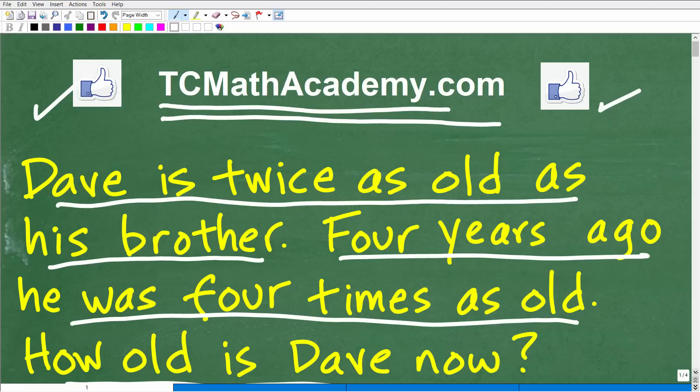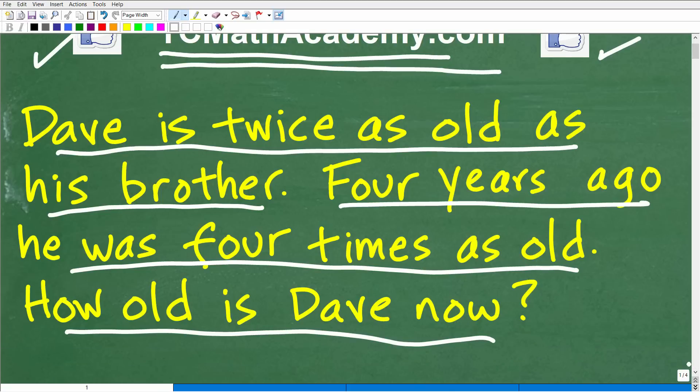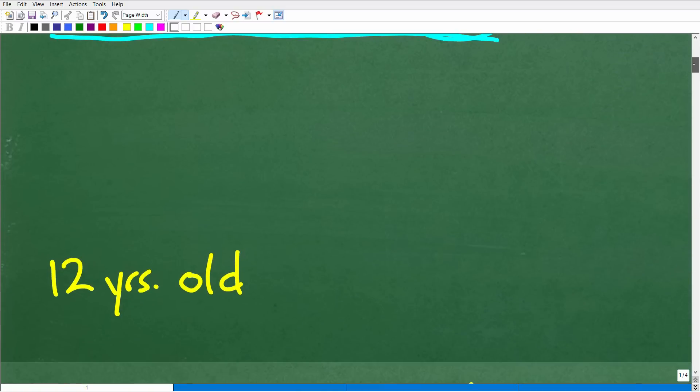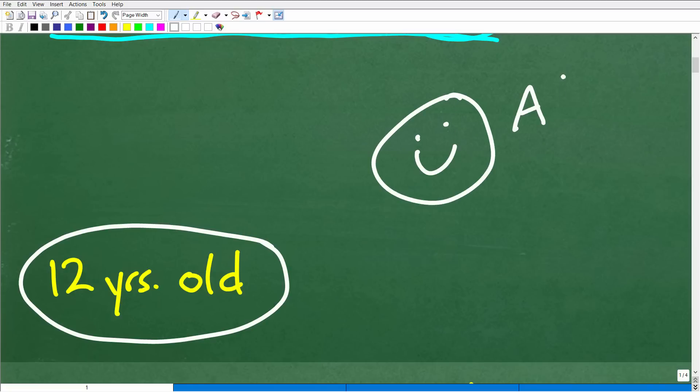Let's take a look at this question one more time. Remember the rule of three: read a math word problem at least three times before you attempt to answer it. And the third time you read that problem, you've got to really make sure you understand what the question is. Dave is twice as old as his brother. Four years ago he was four times as old. How old is Dave now? The answer is Dave is currently 12 years old. If you got this right, that is outstanding. Let me give you an A plus, 100%, and a few stars.